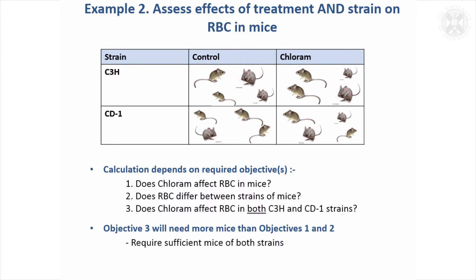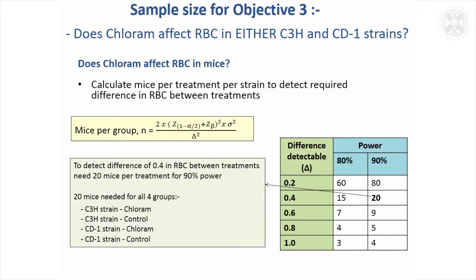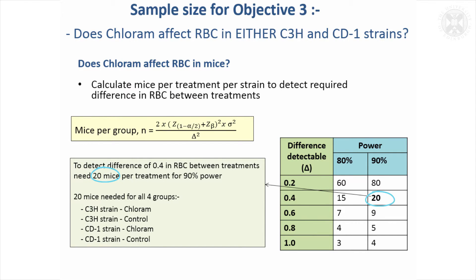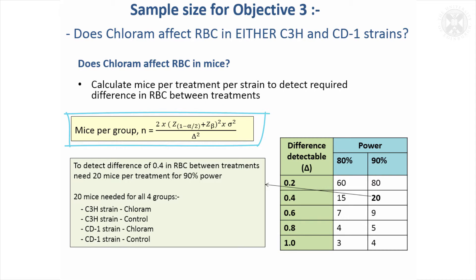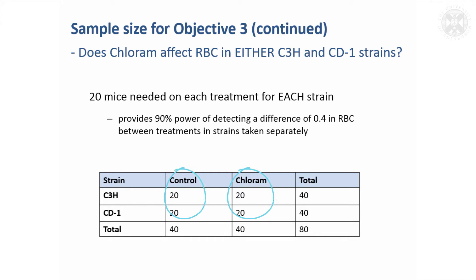The important thing is that we need the right number of mice on both strains. We do the calculation in just the same way, and come up with needing 20 mice. If we want to look at the effect within each of the two strains, we need 20 mice in all four groups — for each of the treatments within each strain. So that's 20 per group for 90% power to detect a 0.4 difference in white blood cell counts, which is a smaller difference than before.